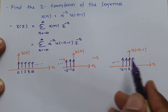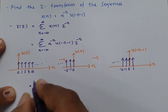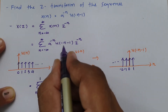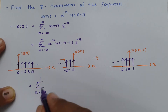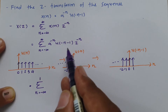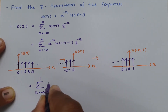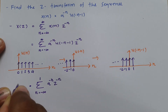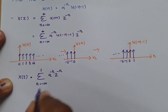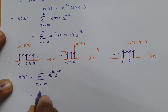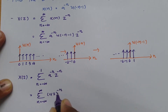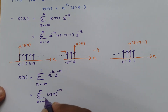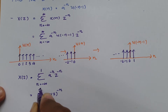Applying this changed limit to the problem, the summation will now start from -∞ and go up to -1. We no longer need to write u(-n - 1) explicitly, since outside that range it multiplies to zero. So X(z) becomes the summation from n = -∞ to -1 of a^(-n) · z^(-n), which simplifies to the summation of (az)^(-n).